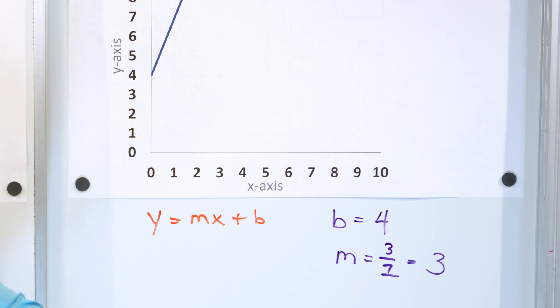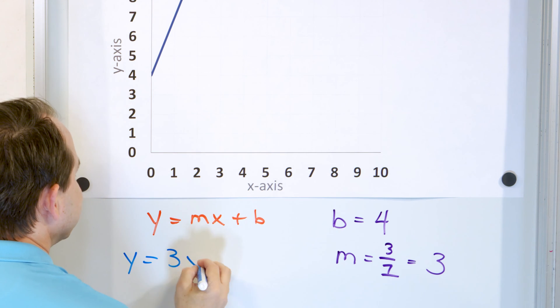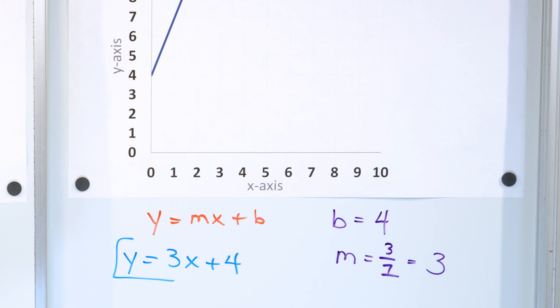So we can now construct this line. m, the slope, is 3 times x plus b. The y-intercept is 4. Three x plus 4. And this is the final answer.